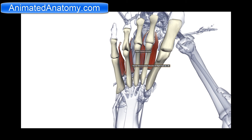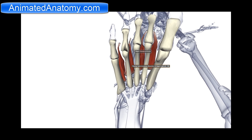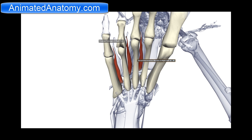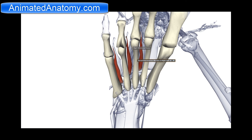Now we have plantar interossei muscles that are slightly different. The plantar interossei muscles arise from the same metatarsal bone where they insert into the phalange. That's why the phalanges here are pulled medially, and because of this the toes are pulled together. That's called the adduction of toes.